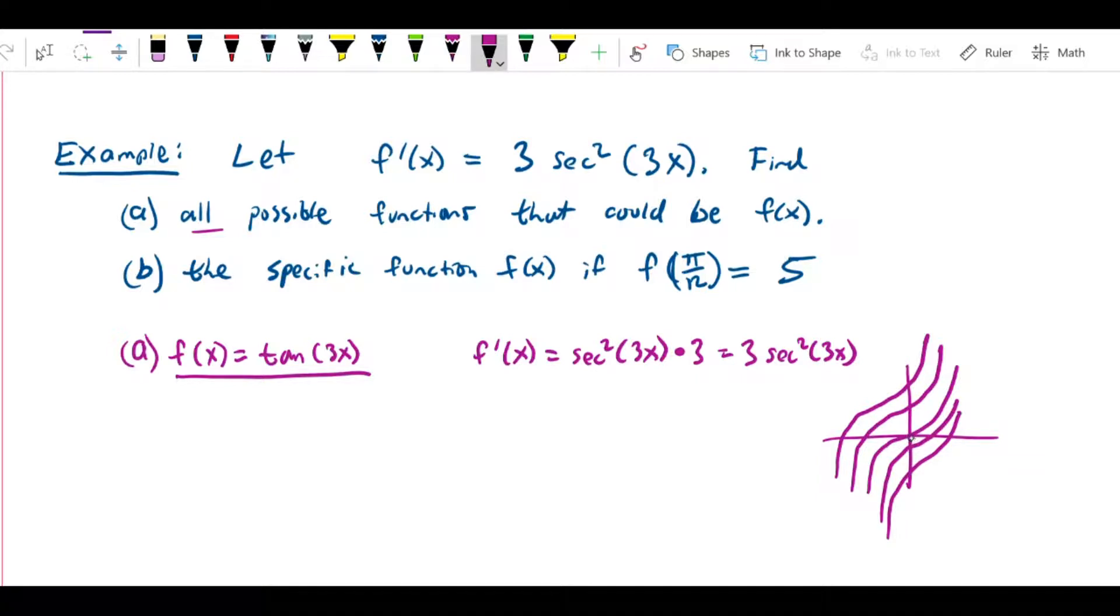In other words, it could be tan(3x), it could be tan(3x) + 1, tan(3x) + 2, tan(3x) minus a million. Any of these would be a legitimate answer.